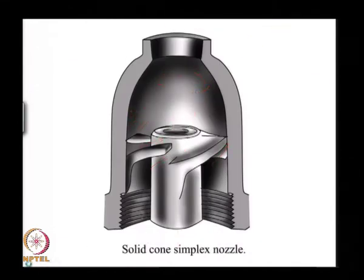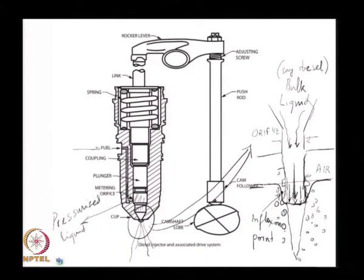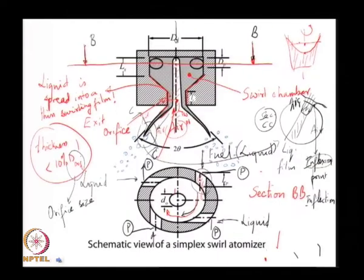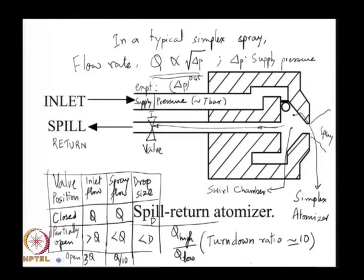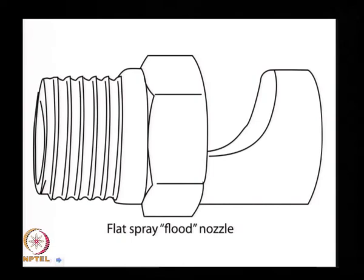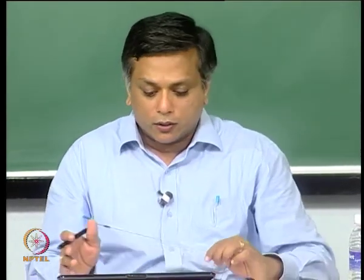All the designs thus far are intended to create axisymmetric sprays—sprays with a general axis about which the spray is expected to be symmetric. However, there are many applications where you do not want a symmetric spray but rather a flat spray. For example, if washing the sides of a building, you would prefer a fan spray rather than an axisymmetric spray—a flat spray to clean dirt on the side of a wall. This is one such design.